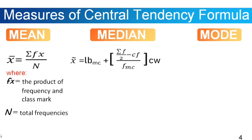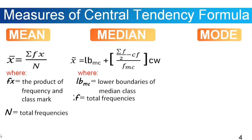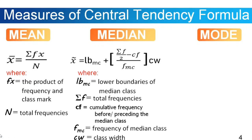Now let's go to the median formula. That is: x̄ is equal to Lb_mc plus the quantity (Σf/2 minus cf) all over f_mc, then multiply that with cw. Where Lb_mc is the lower boundary of the median class, Σf is the total frequencies, cf is the cumulative frequency before or preceding the median class, f_mc is the frequency of the median class, and cw is the class width.